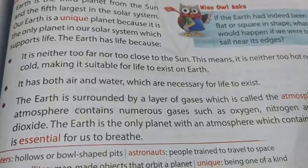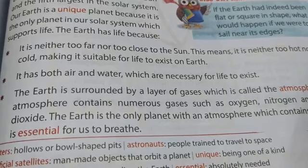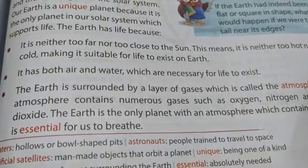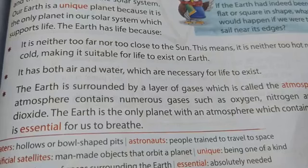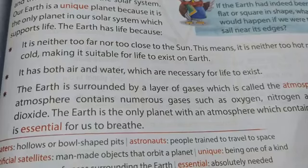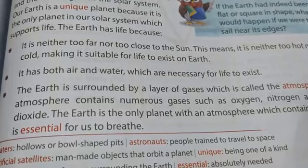First, the Earth is neither too far nor too close to the sun, meaning it is neither too hot nor too cold, making it suitable for life. Second, Earth has both air and water, which are necessary for life to exist. Earth is surrounded by a layer of gases called the atmosphere, which contains oxygen, nitrogen, and carbon dioxide — and oxygen is essential for us to breathe.